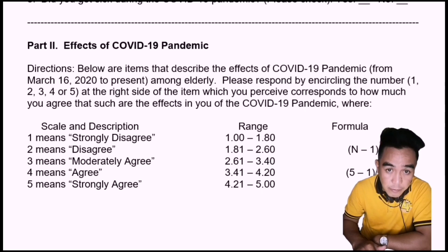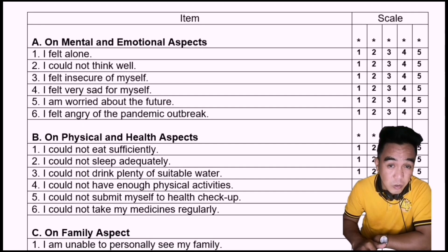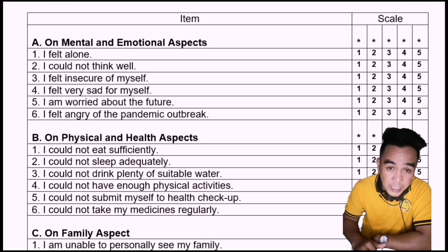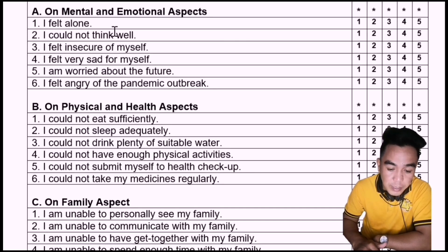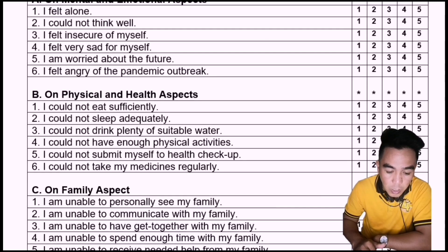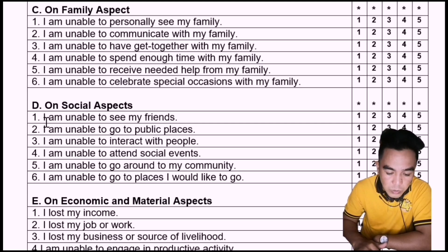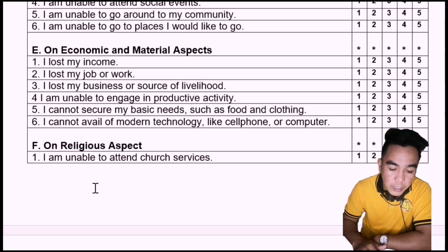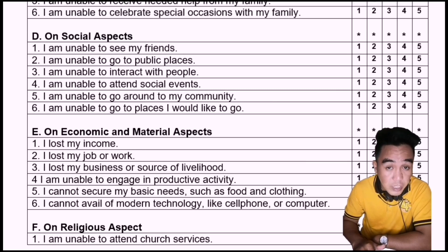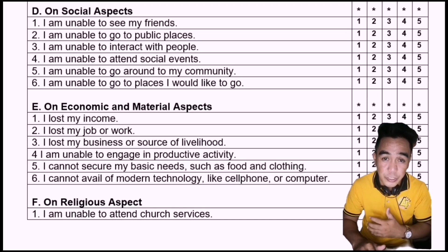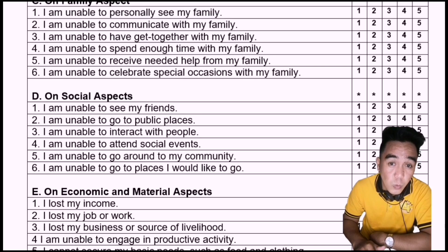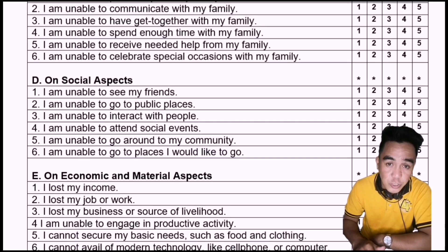As we observe and evaluate each item in this study, the researcher was able to categorize them by group in terms of aspects. We have: A — mental and emotional aspects; B — physical and health aspects; C — family aspects; D — social aspects; E — economic and material aspects; and F — religious aspects. When doing Part 2, make sure that each item is grouped accordingly, and each item belongs to its respective group.